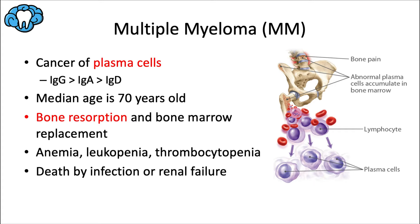Multiple myeloma is a cancer of plasma cells — an overproduction of malignant plasma cells that results in multiple tumorous masses scattered throughout the skeletal system. Plasma cells are a type of white blood cell that produces immunoglobulins or antibodies. All of these abnormal plasma cells secrete the same antibody, so a myeloma can be classified by the type of immunoglobulin being mass produced. The most common type produced in myeloma is IgG, followed by IgA, and then IgD.